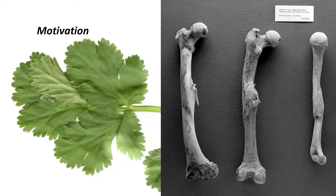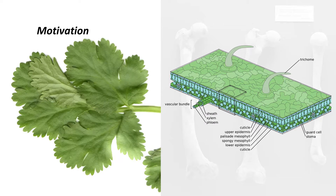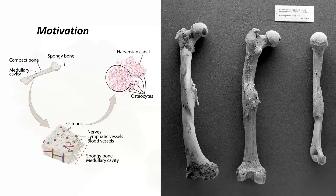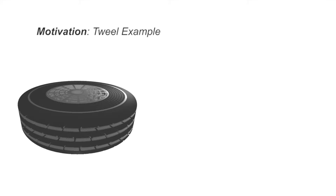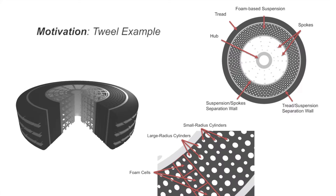Real-world materials have complex hierarchical functional structures. For example, leaves are composed of multiple layers and networks of cells. Similarly, bones consist of multiple layers, each encapsulating complex cell structures with specific functions. Engineering designs follow a similar hierarchical structure. For this specific design, we decompose the tire into spokes that can be thought of as edges of a 3D lattice, a foam section, and an external threading that absorbs shocks and provides adherence to the tire.